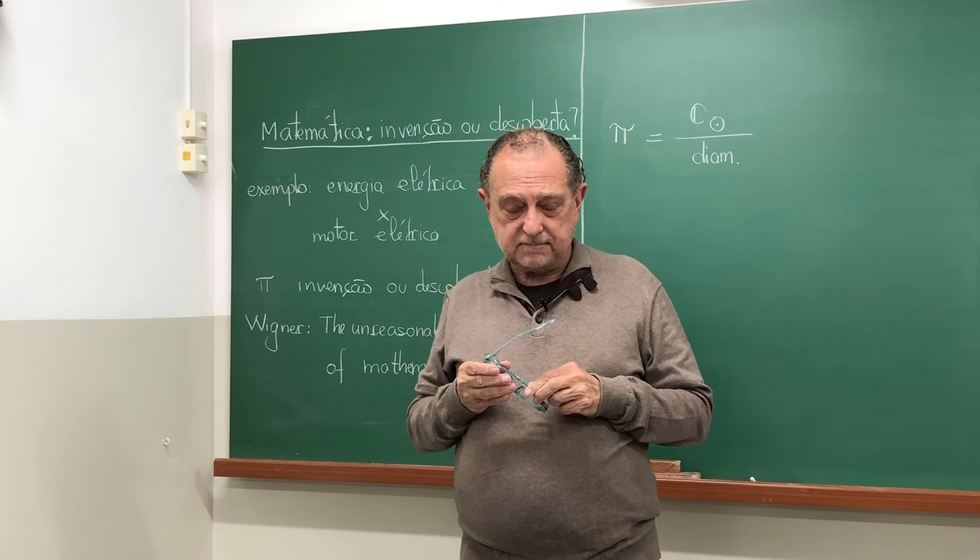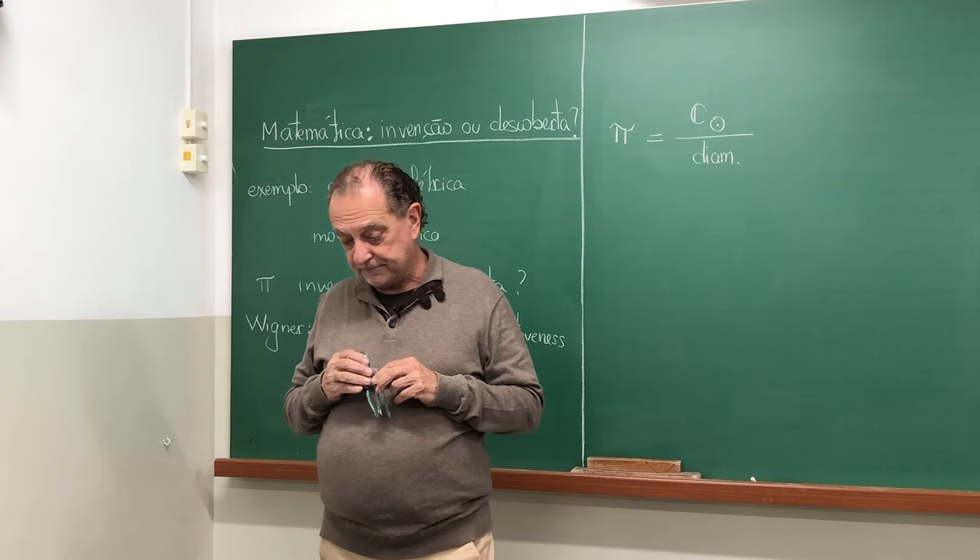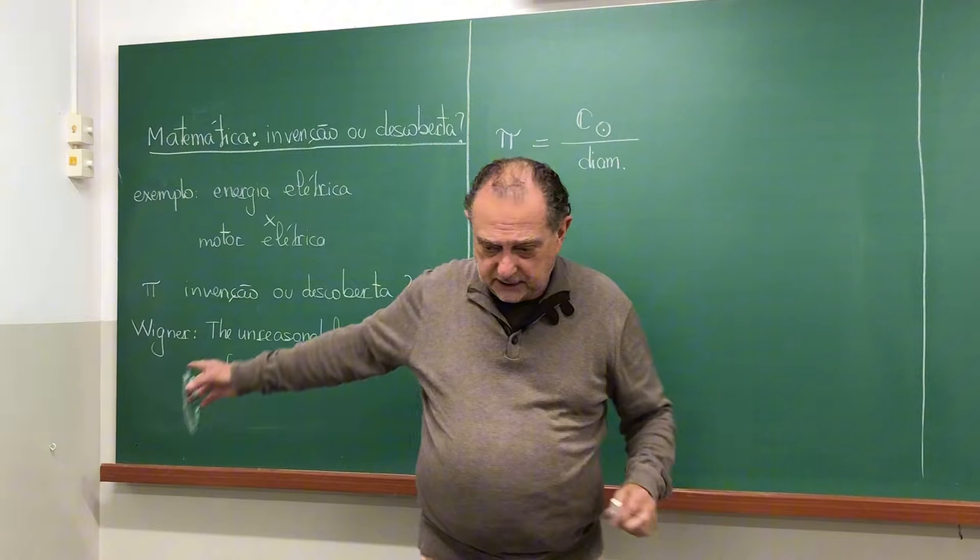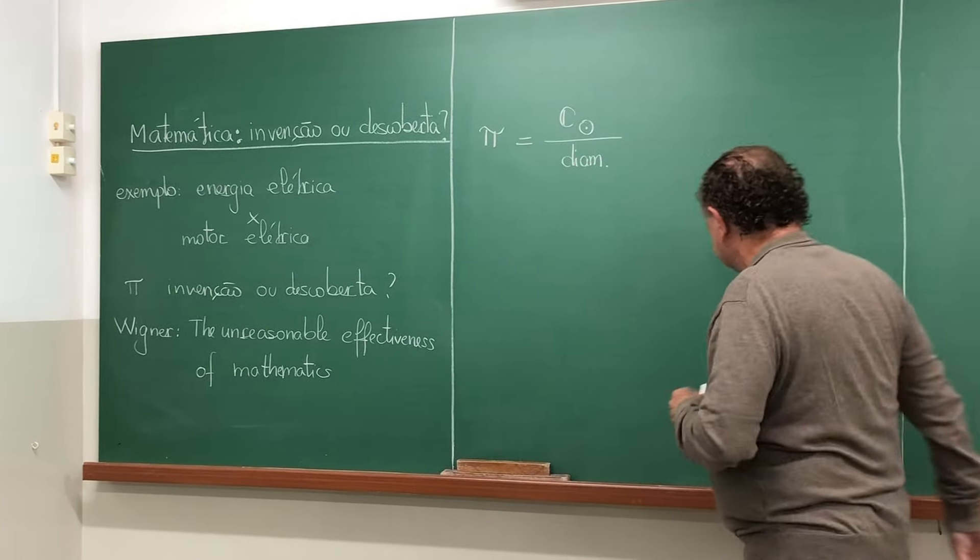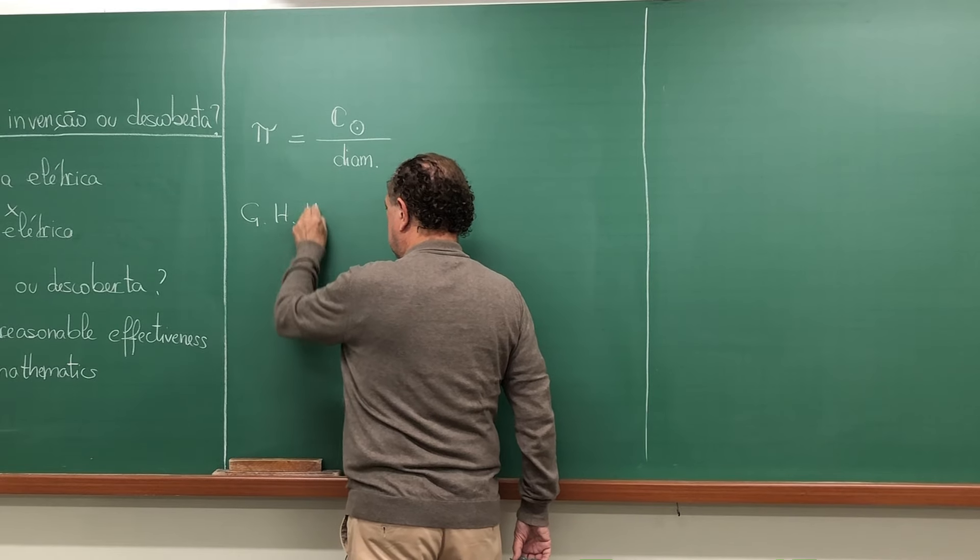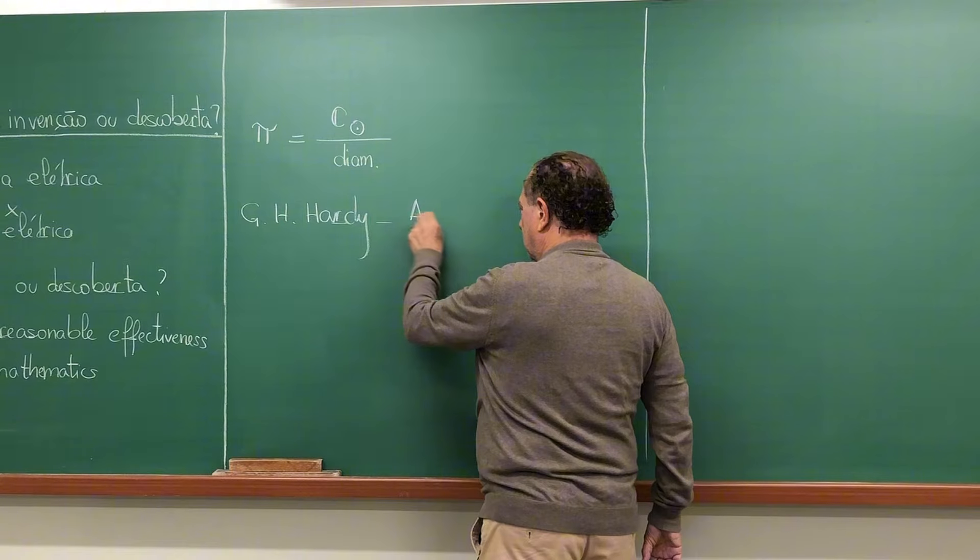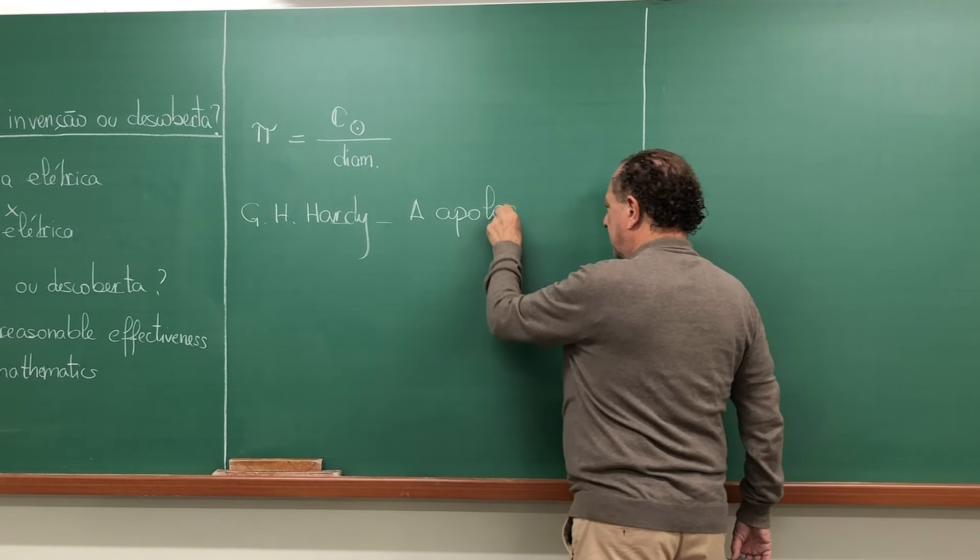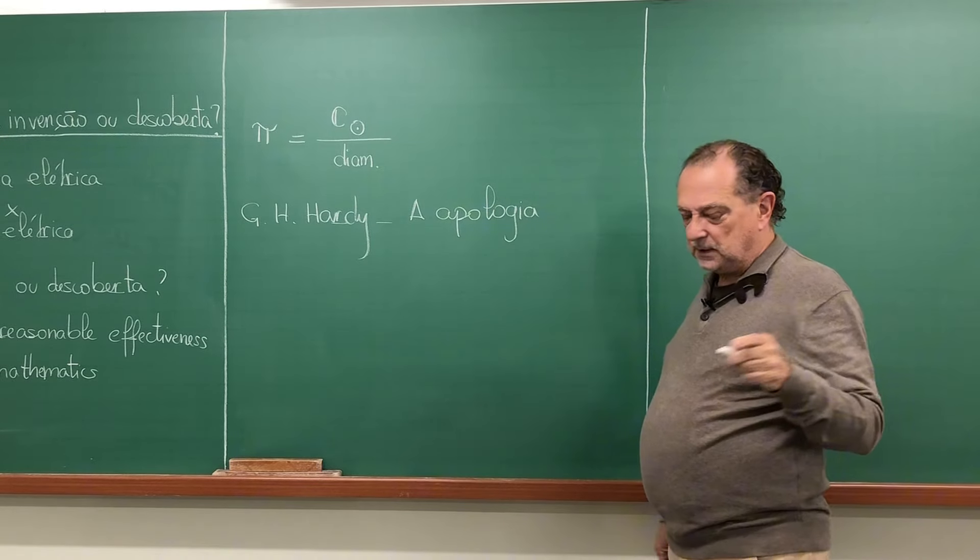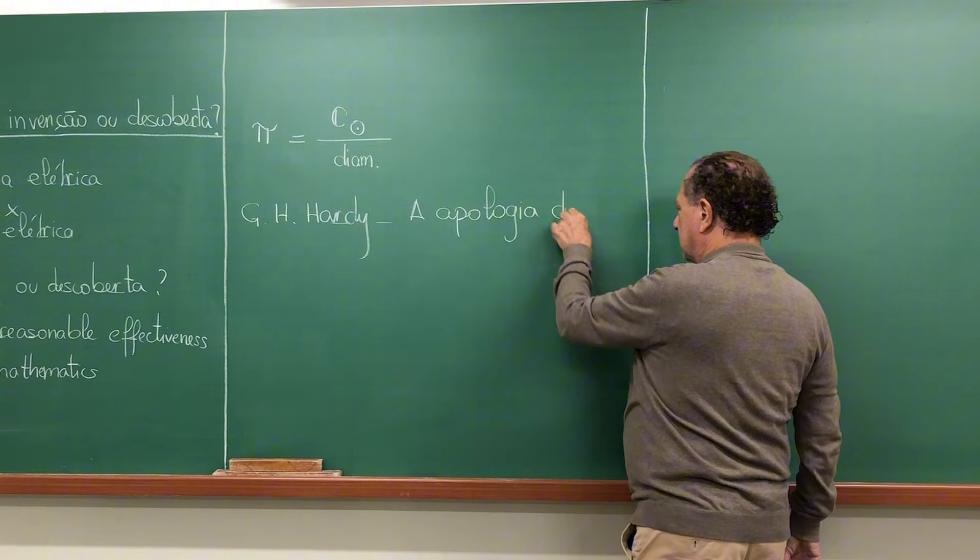Pythagorean theorem. Now I'll make other comments. Here I cited a book, in a bit I'll talk about it, from Wigner. But there's another book I wanted to cite from a guy called G.H. Hardy, a great English mathematician who wrote a book called 'A Apologia.' In Portuguese, in English it's 'Apology,' and in Portuguese I have an edition called 'Em Defesa' - translated as 'In Defense of a Mathematician.'